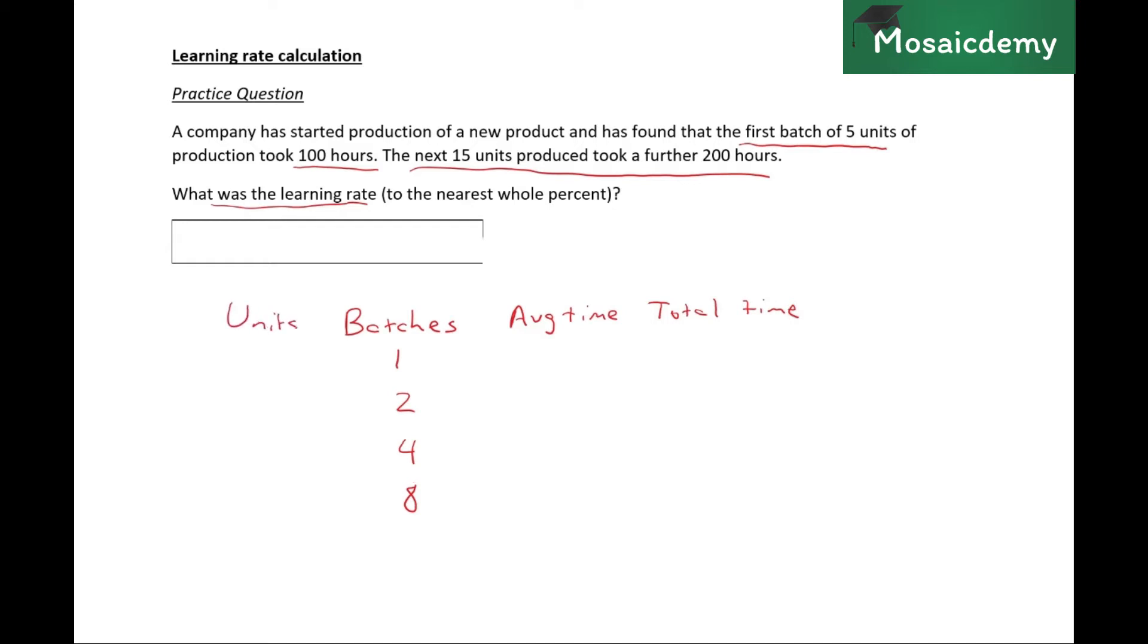So let's make a column for units as well. Five, five into two is ten, five into four is twenty, and five into eight is forty. So what do they want? They said the first batch of five units took a hundred hours to make, right?